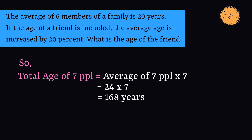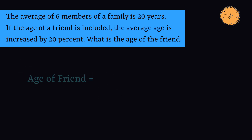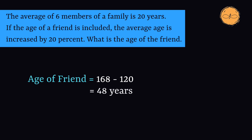We are asked for the friend's age. The age of the friend is equal to the total age of the family members including the friend minus the total age of the family members, which we have already calculated as 168 and 120. And 168 minus 120 is 48.